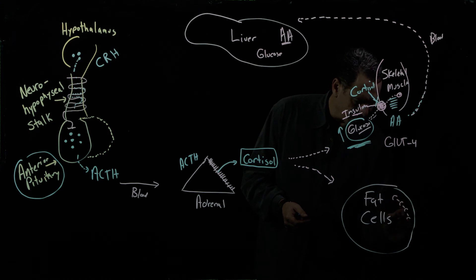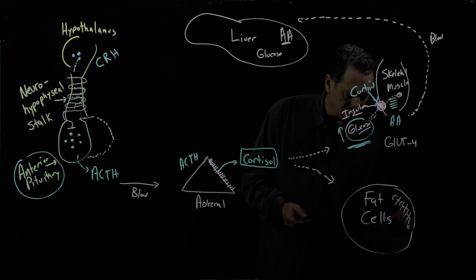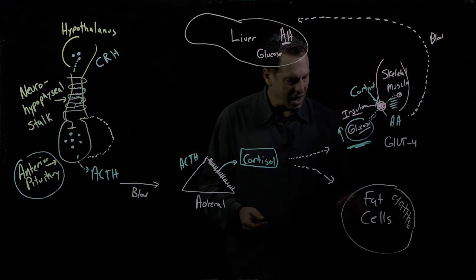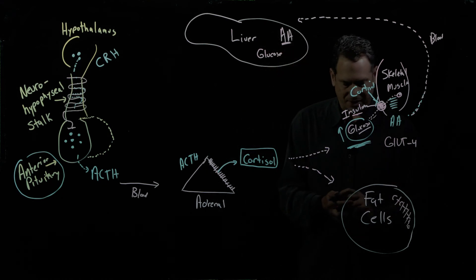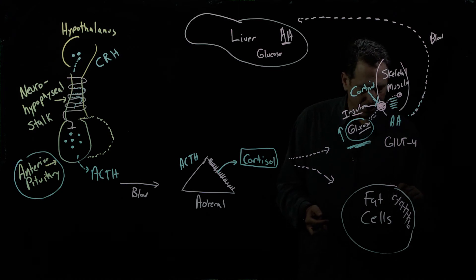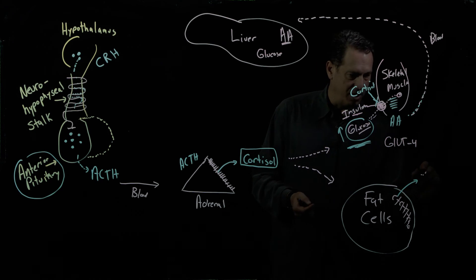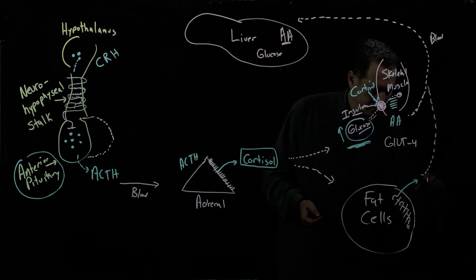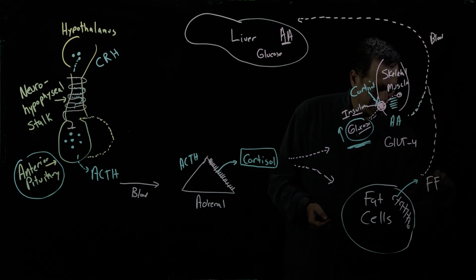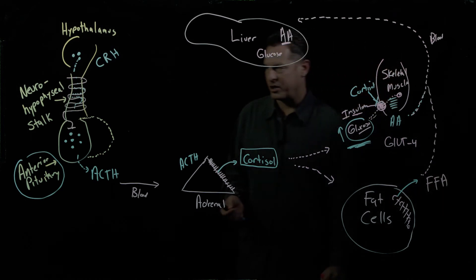And what cortisol does in fat cells is it causes the fatty acid chains, which are just long series of carbon chains, to start to get cleaved in a process called lipolysis. And what that allows is those fatty acids get pushed out also into the blood, free fatty acids from lipolysis.